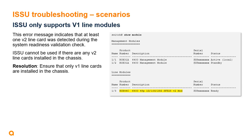Lastly, the error message 'ISSU Only Supports V1 Line Modules' indicates that at least one version 2 line card was detected during the system readiness validation check. ISSU cannot be used if any V2 line cards are installed in the chassis. To resolve this, ensure that only version 1 line cards are installed in the chassis when ISSU is initiated.